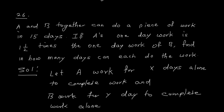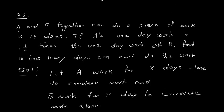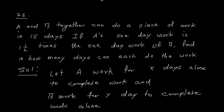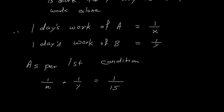Now, A's one-day work is one and a half times B's work. As per the first condition, A and B together can do a piece of work in 15 days, meaning in one day they do 1/15 of the work. So: 1/x + 1/y = 1/15. This is equation 1.